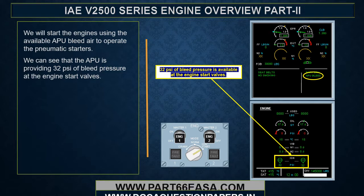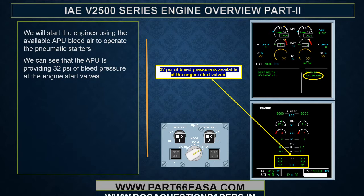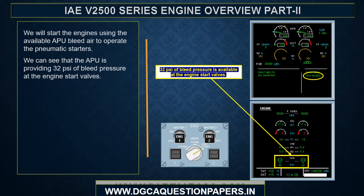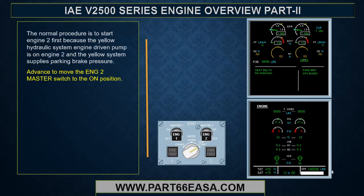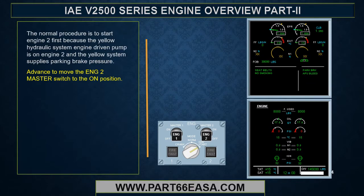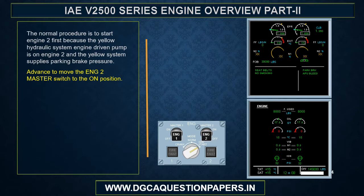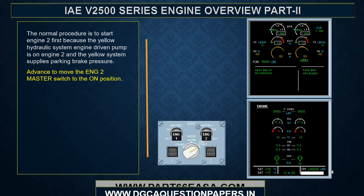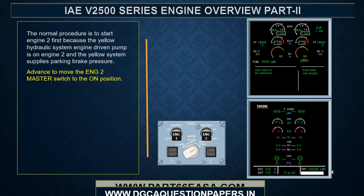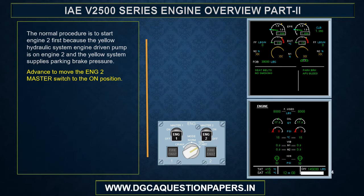We will start the engines using the available APU bleed air to operate the pneumatic starters. We can see that the APU is providing 32 psi of bleed pressure at the engine start valves. The normal procedure is to start engine 2 first because the yellow hydraulic system engine-driven pump is on engine 2 and the yellow system supplies parking brake pressure.